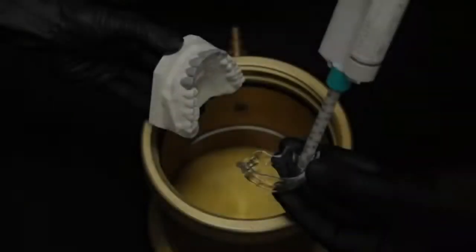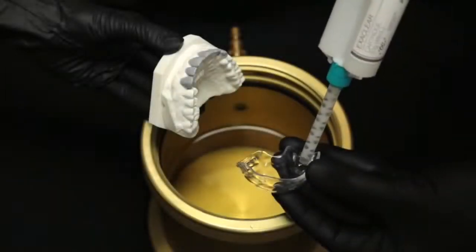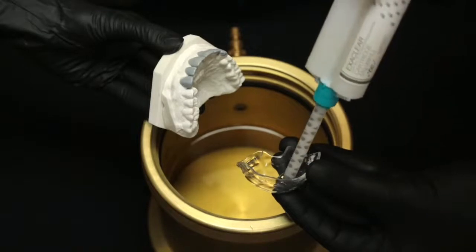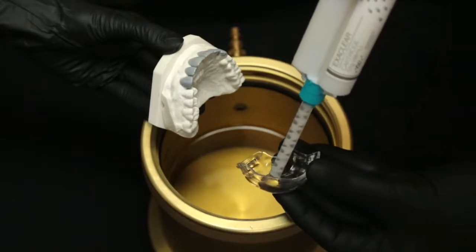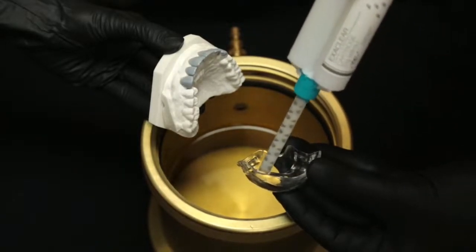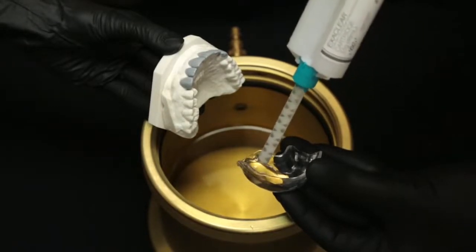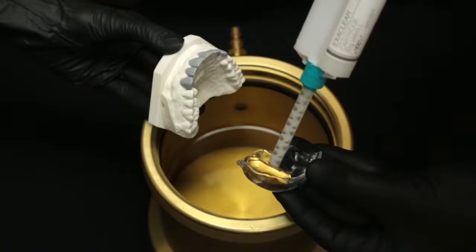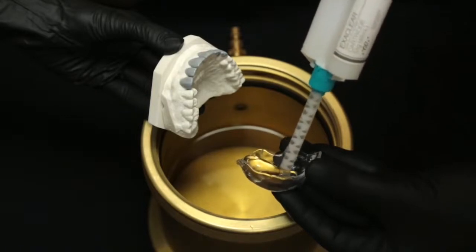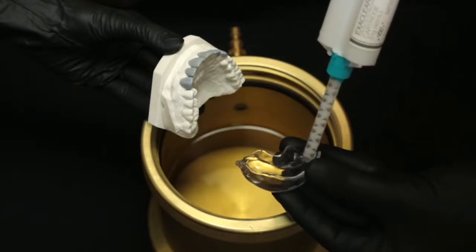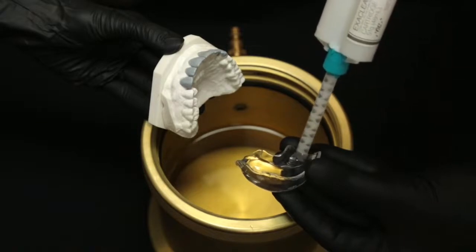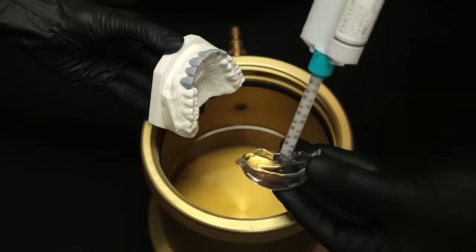A clear polyvinyl siloxane material, Exaclear by GC, was injected into a non-perforated tray. This can also be performed on a stone model that is a duplicate of the wax-up, or in some cases from a pre-existing diagnostic model where there is no requirement for change in the anatomical form of the natural dentition.